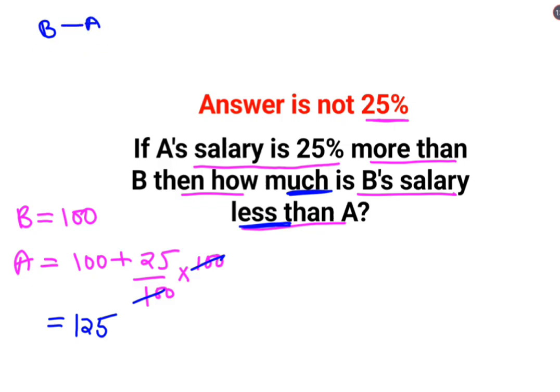So what we will do is (B minus A) upon, the comparison is with A, multiplied by 100. So what we will do is B's salary which is 100 and 125. Sorry, we'll do, because A is higher, so we'll do A minus B. So A minus B, so 125 minus 100, that gets you 25 upon 125.